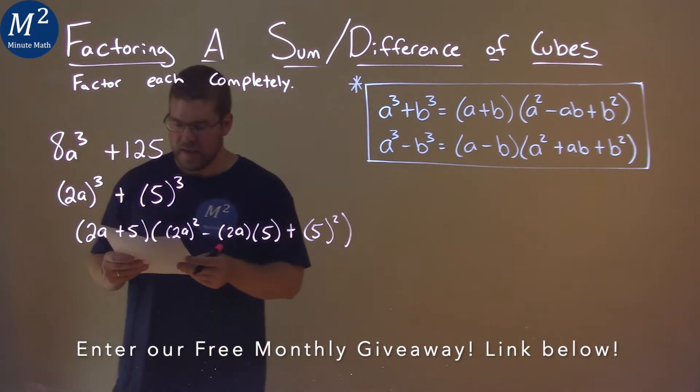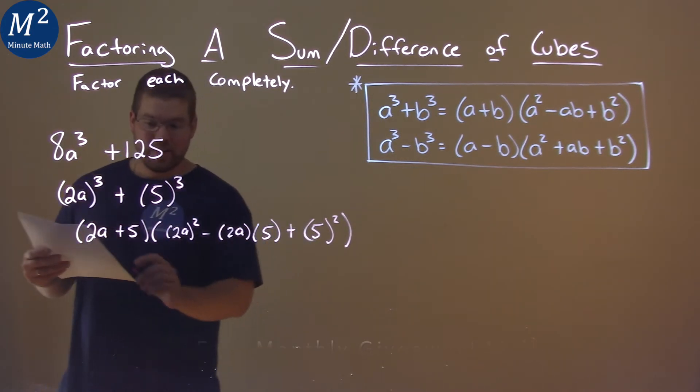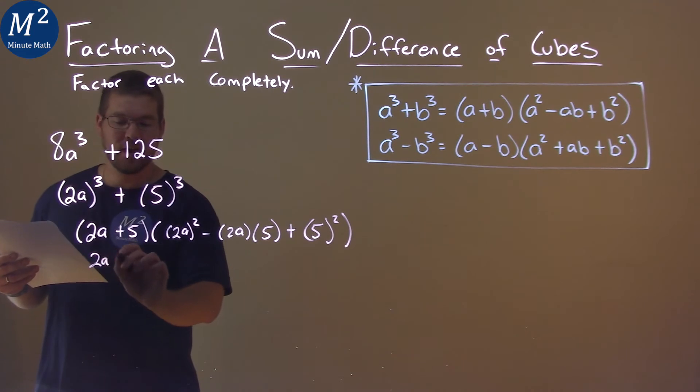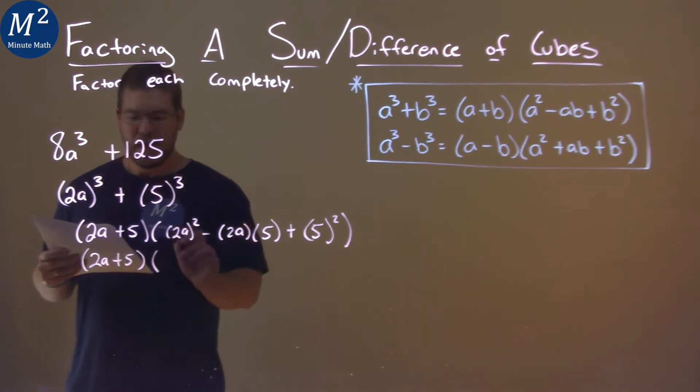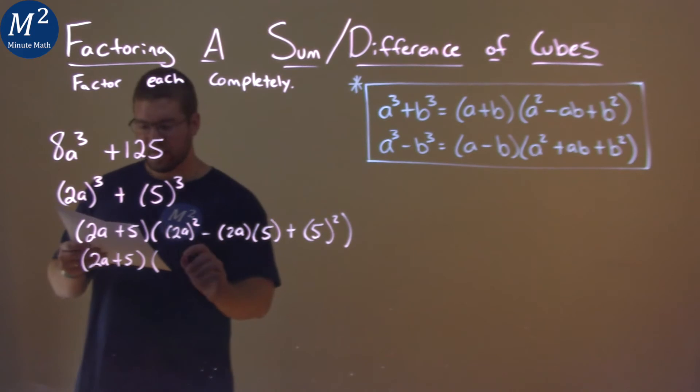Wrote it all out. Now, let's simplify this. 2a plus 5 just comes down. And 2a all squared is going to be a 4a squared. We subtract here. 2 times 5 is 10.